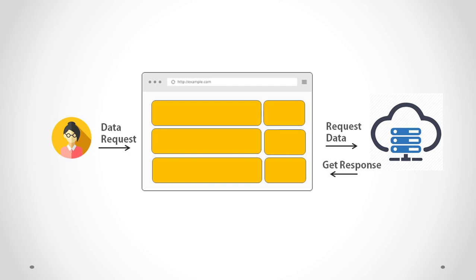Comparing with the standard request, an AJAX request is quicker and gets a response very quickly. Now let's understand how to create an AJAX request using the XMLHttpRequest object.